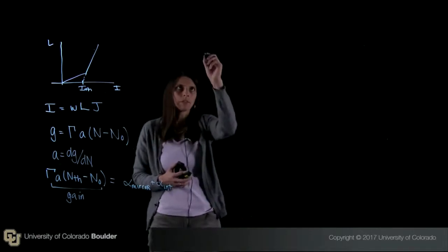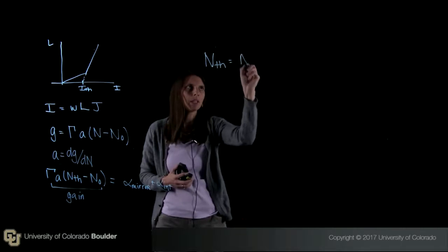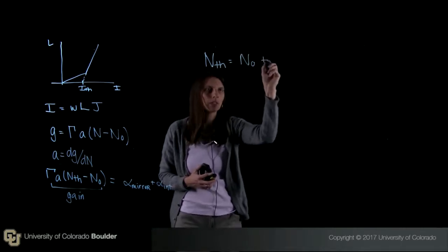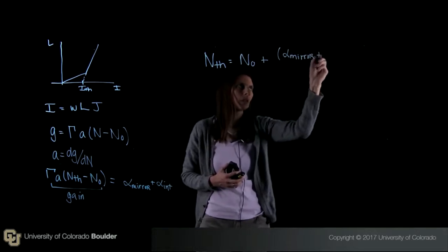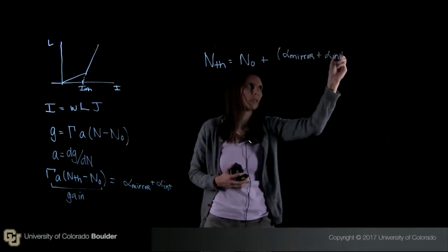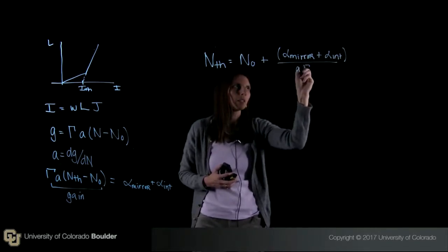We can write this a different way if we want. We can write that n threshold is equal to n0 plus alpha mirror plus alpha internal over a times gamma.